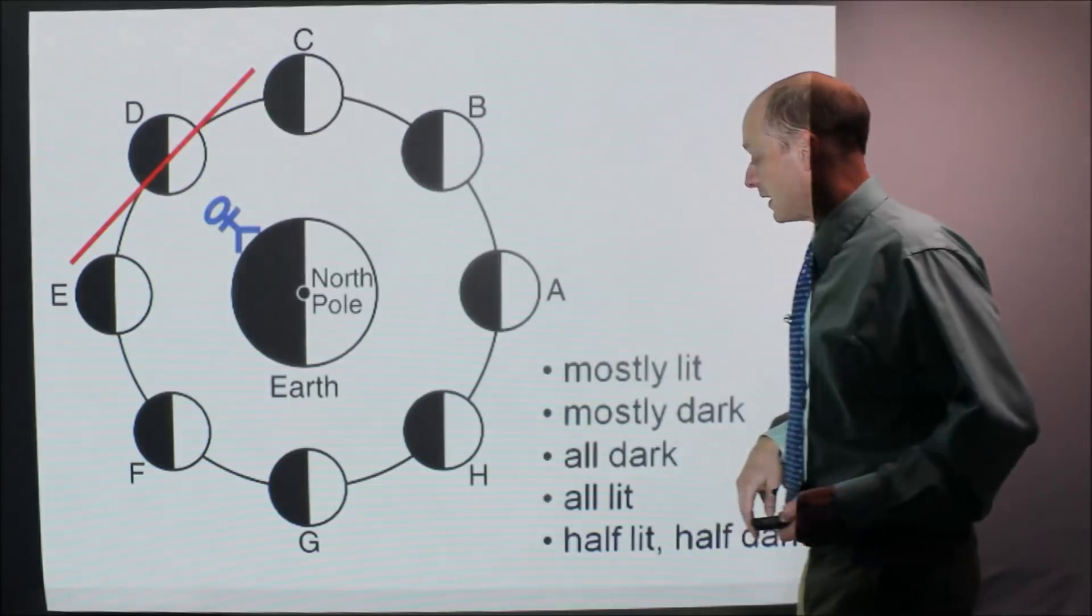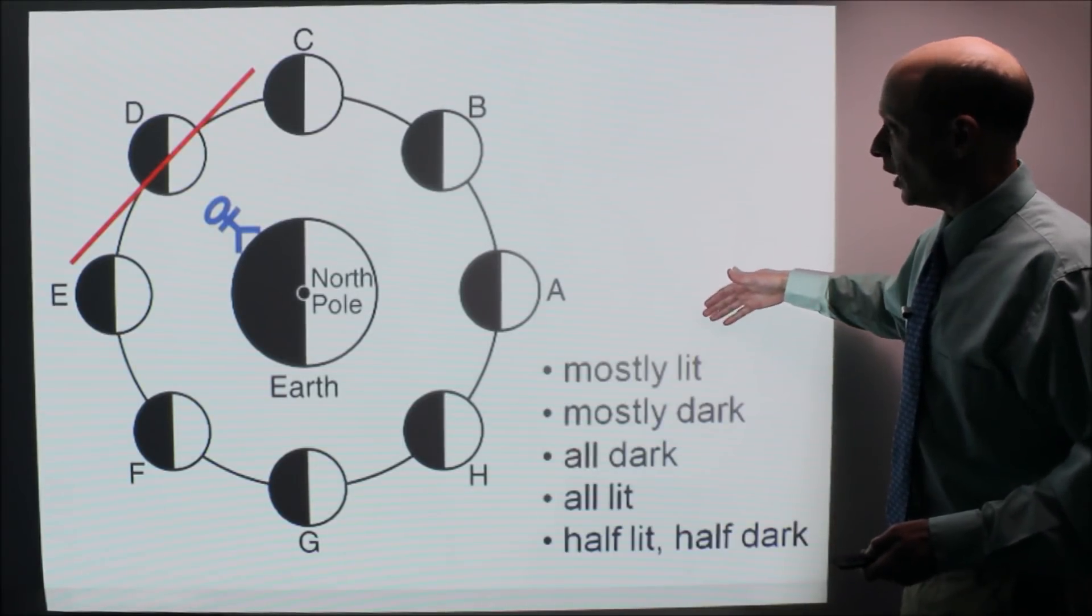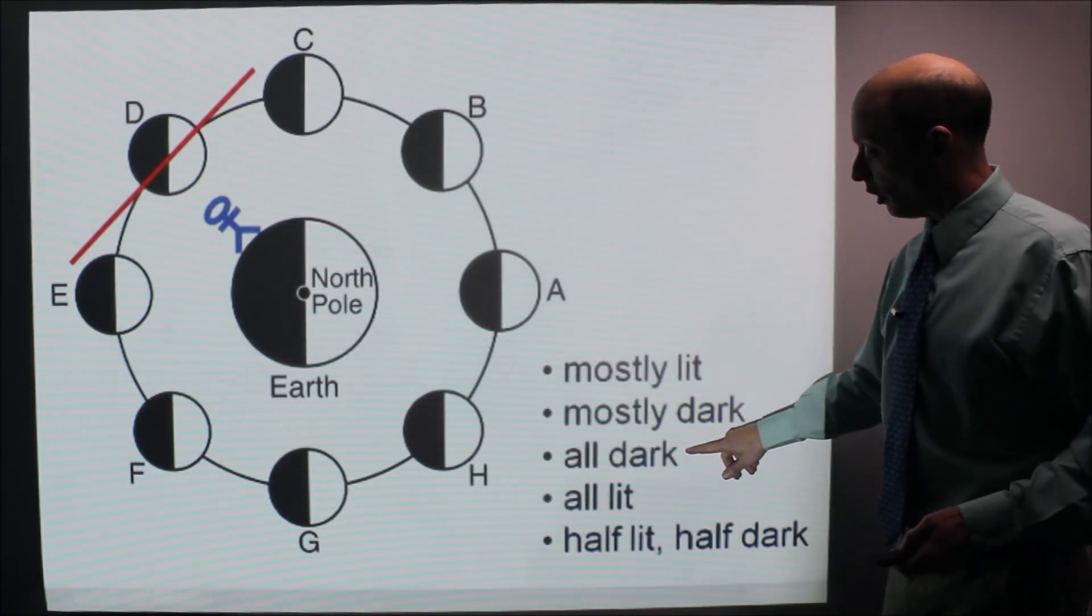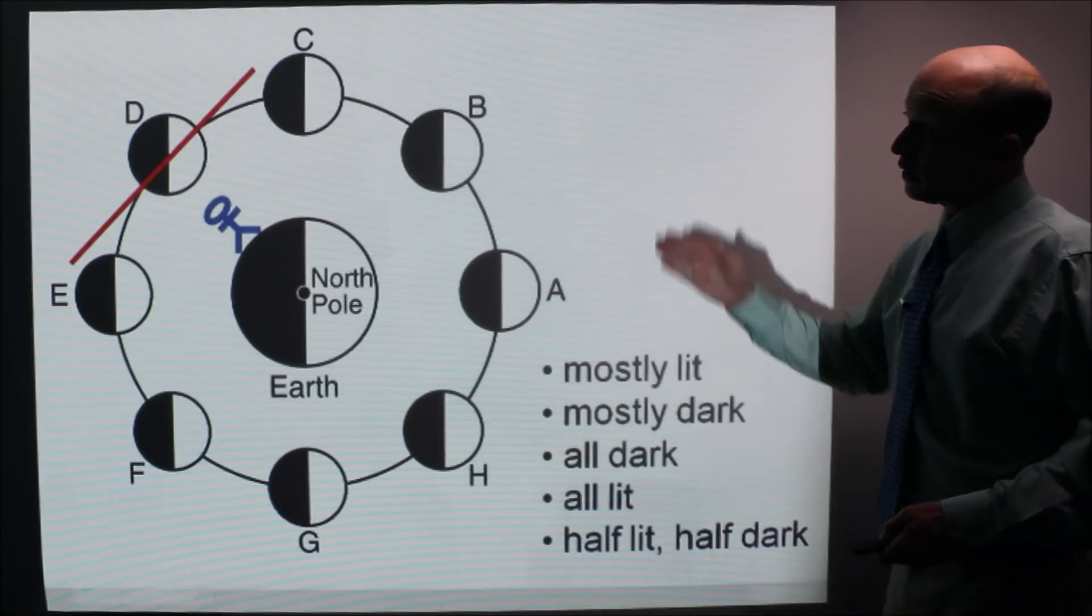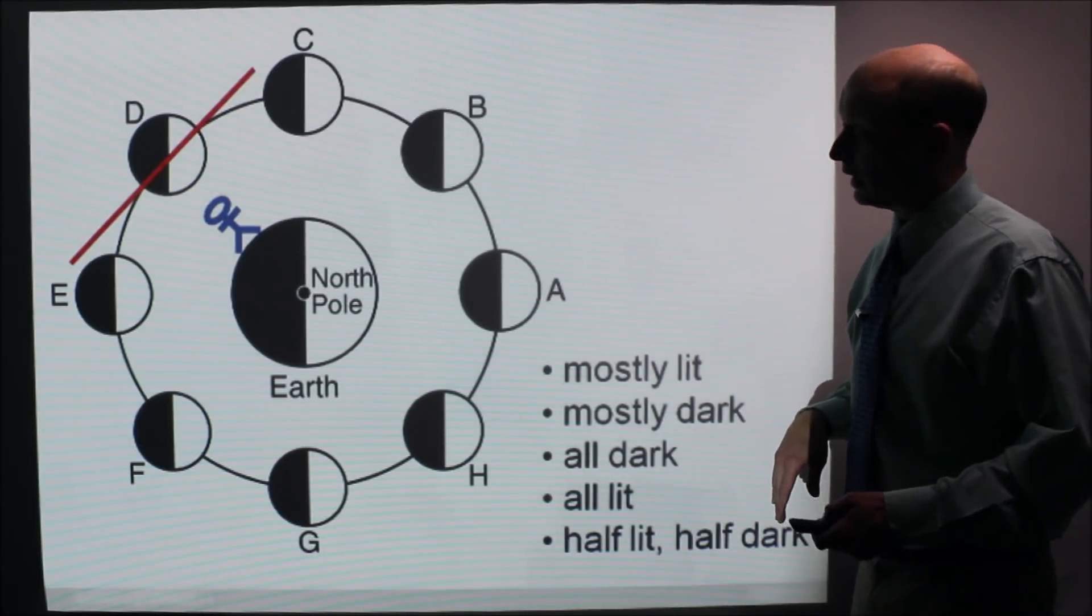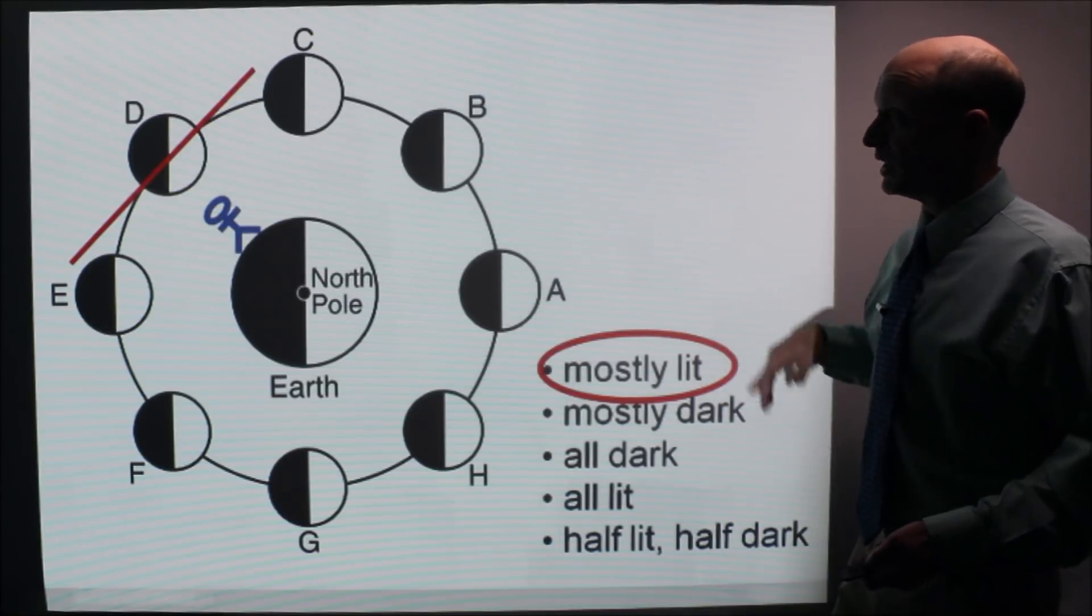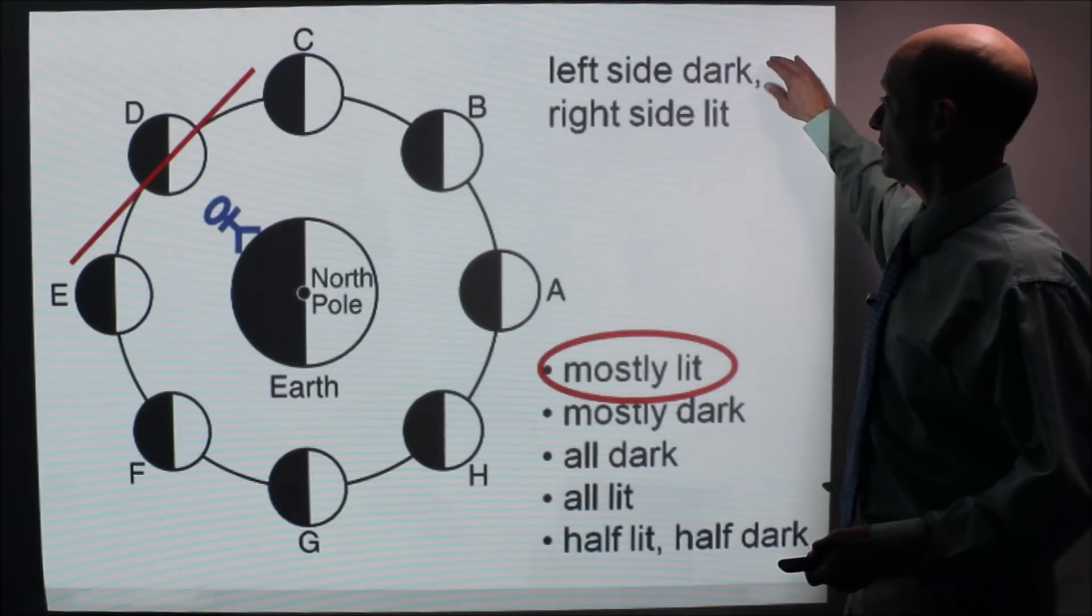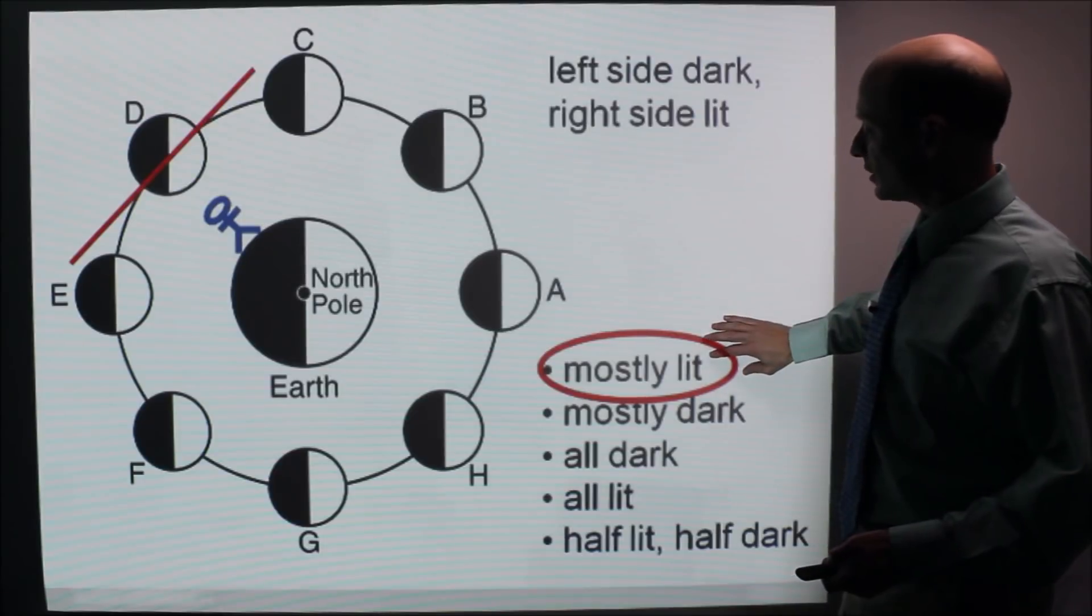The question that you want to ask is, when that person looks up, do they see the moon to be mostly lit, mostly dark, all dark, all lit, or half lit, half dark? Looking at that, you'll see that it is going to be mostly lit, and then you want to determine is the left side or right side that is lit and dark. You're going to see left side dark, right side lit, and the right side is mostly lit.